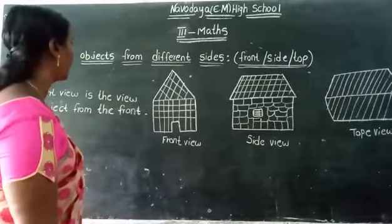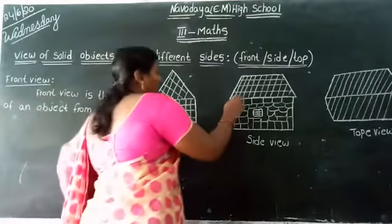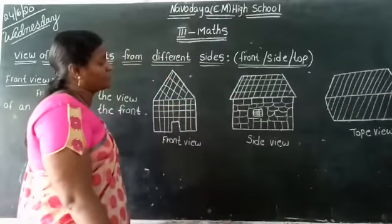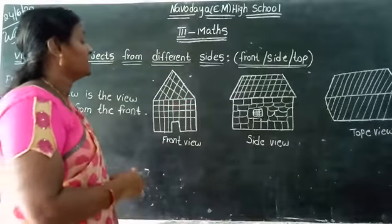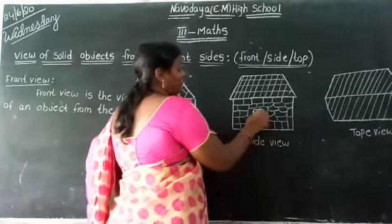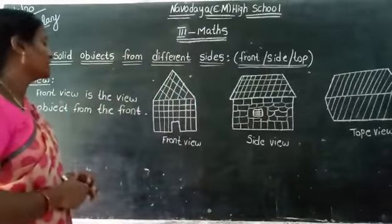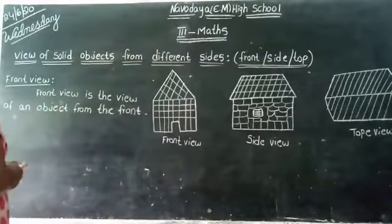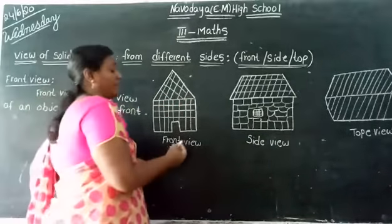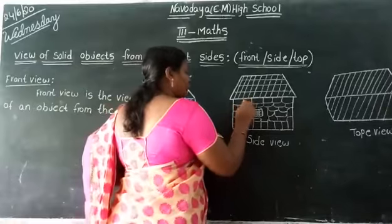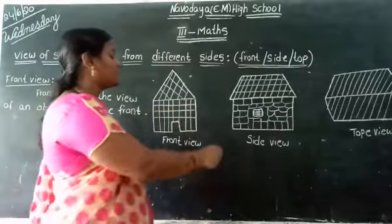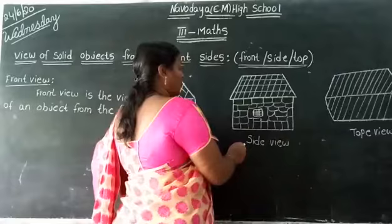Next, side view. This is the house. We can observe this house from the side — this is the side window. This is the side view. Side view is the view of an object from the side. This is side view.